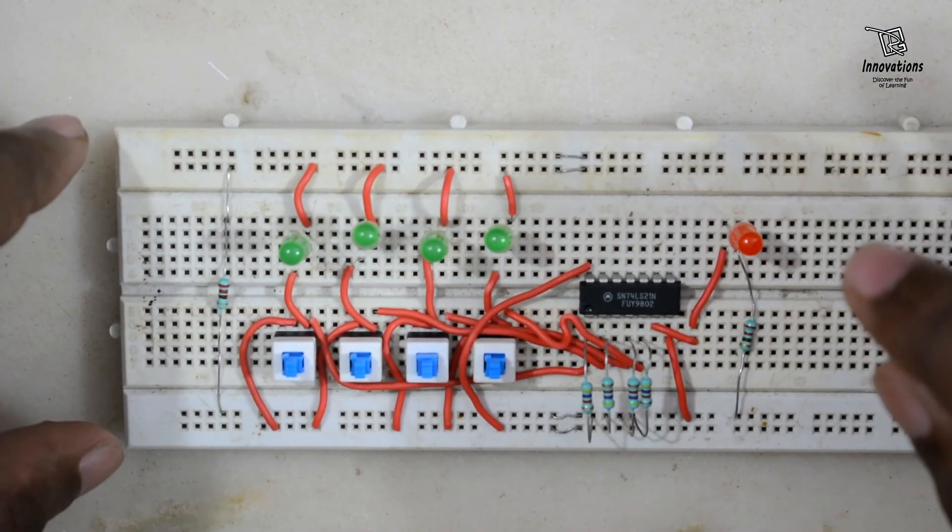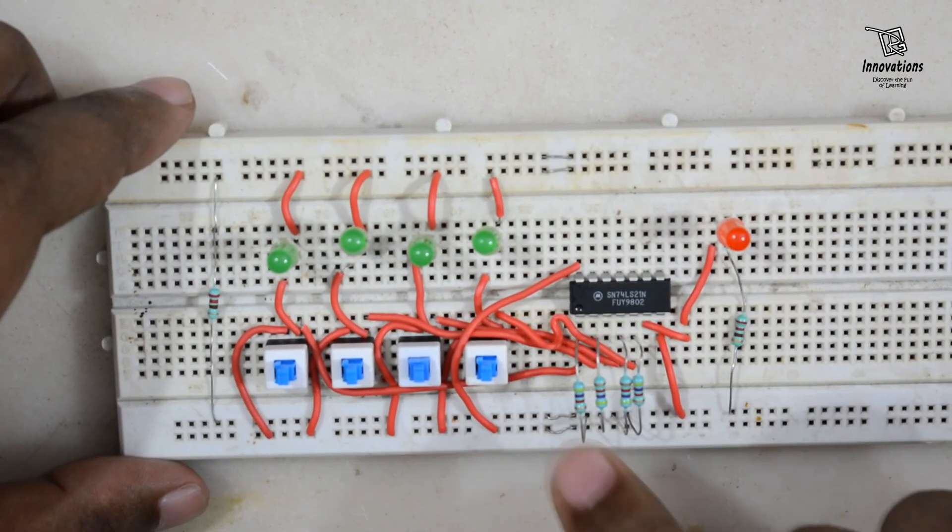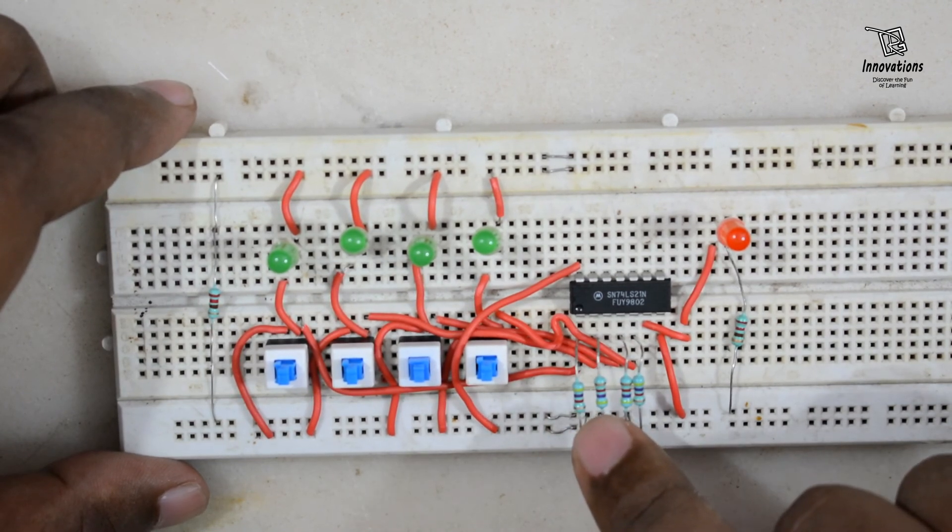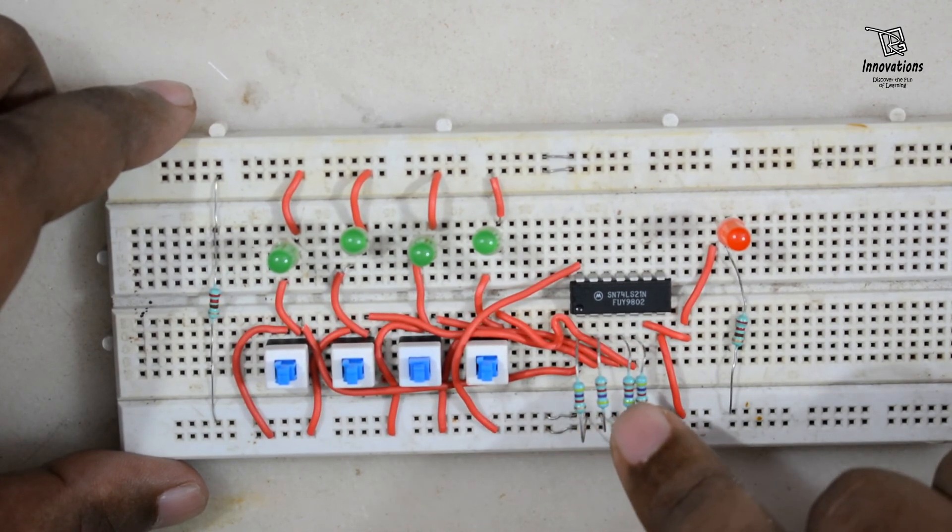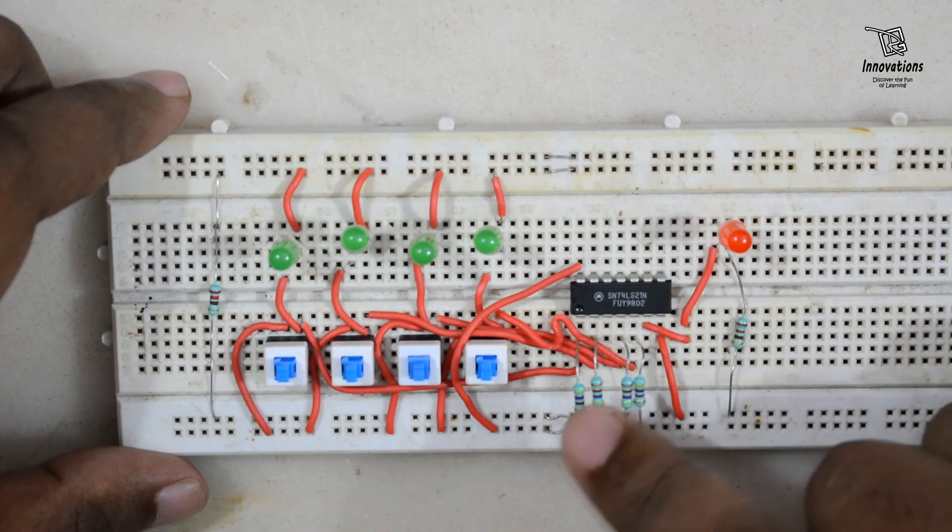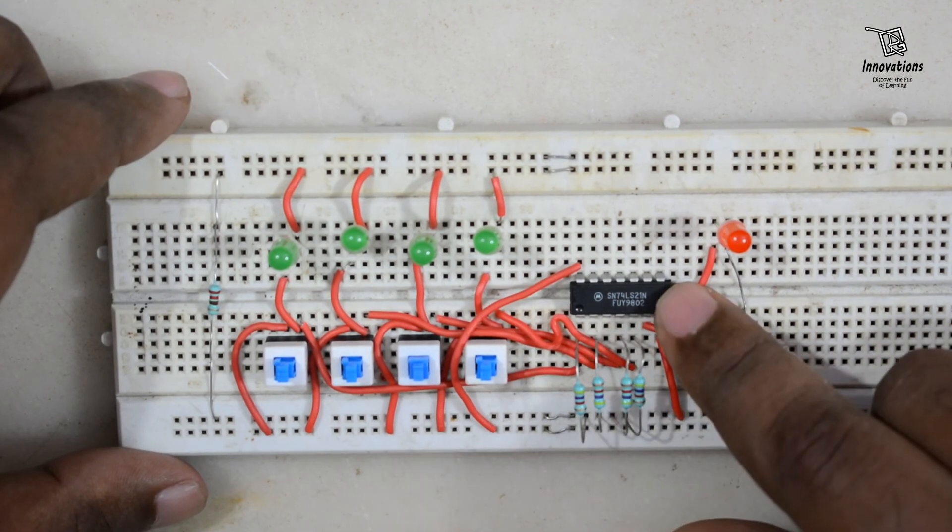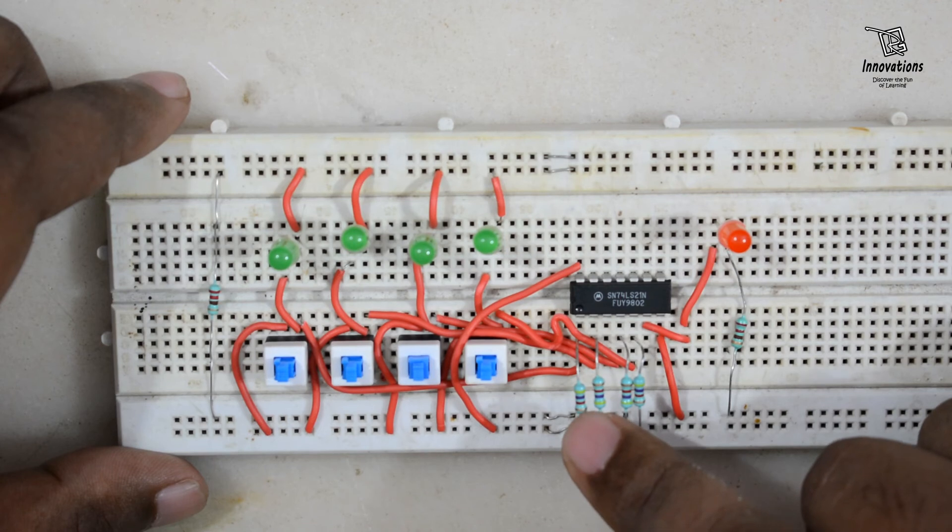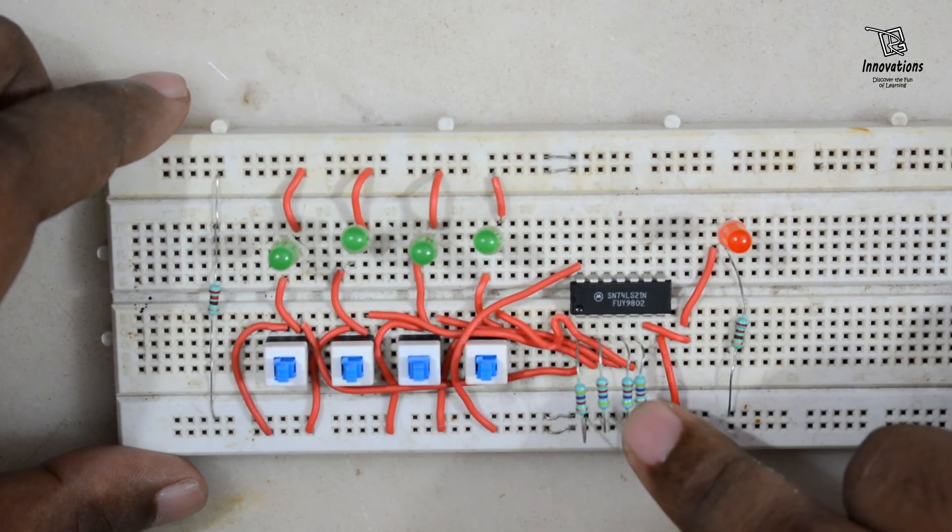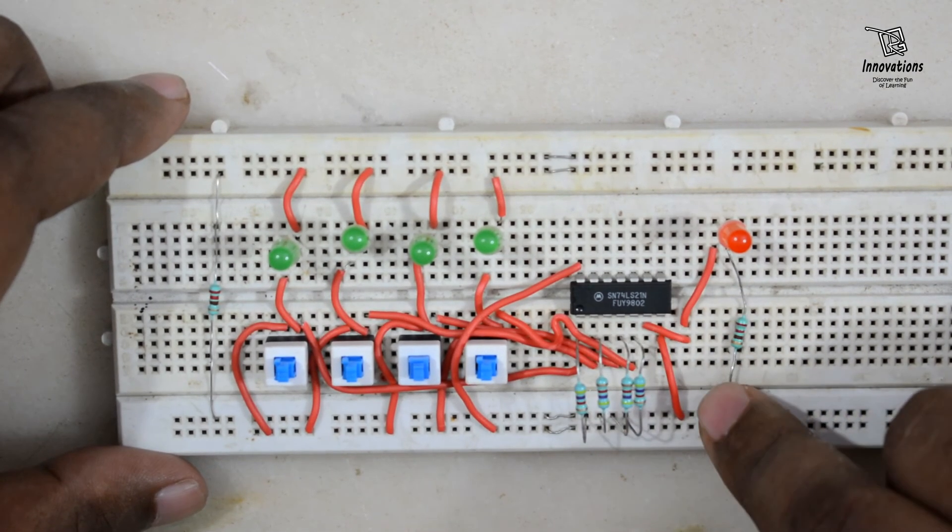We've placed the IC on the breadboard. In the circuit diagram, I showed 10K pull-down resistors, but we found that 10K wasn't grounding properly. So we reduced the resistors to 4.7K, and with these 4.7K pull-down resistors, the IC works fine.